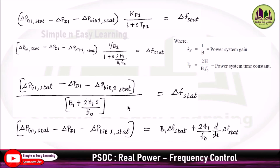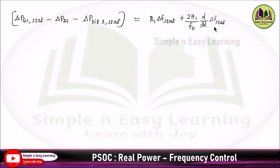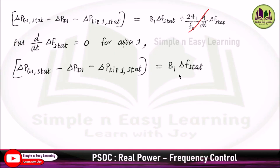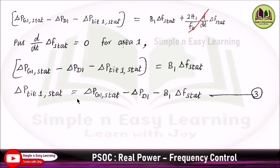Taking the whole term to the other side multiplied by Δf_stat: the first term is B1·Δf_stat and the second is (2H1·s/f0)·Δf_stat. Replacing s with d/dt, for steady-state analysis, d/dt of Δf_stat = 0, so the second term vanishes. The remaining expression allows us to find ΔPti1_stat, giving equation 3: ΔPti1_stat = ΔPg1_stat − ΔPd1 − B1·Δf_stat.